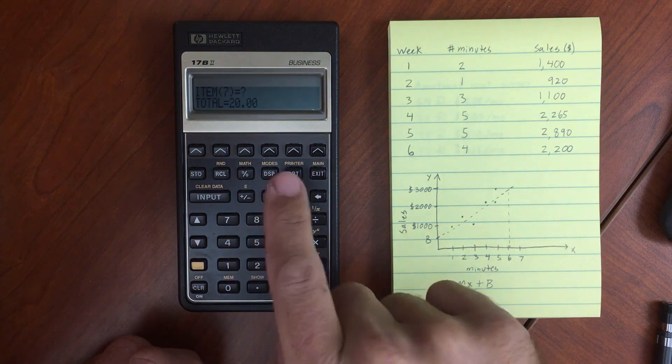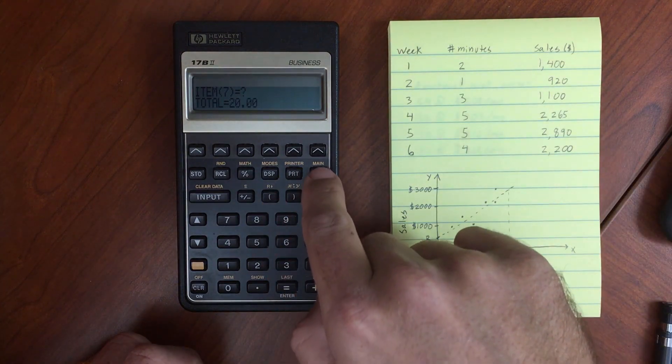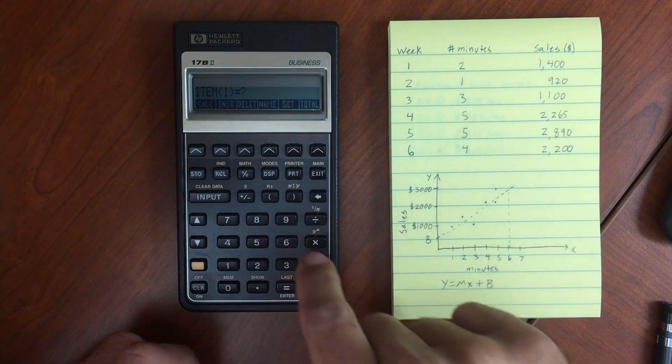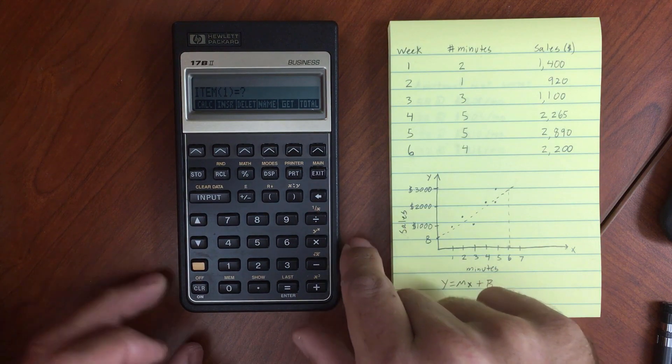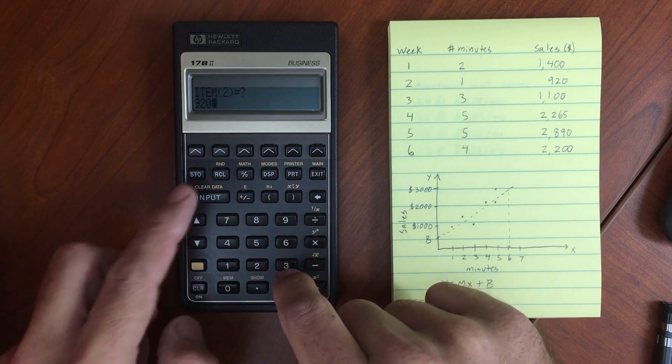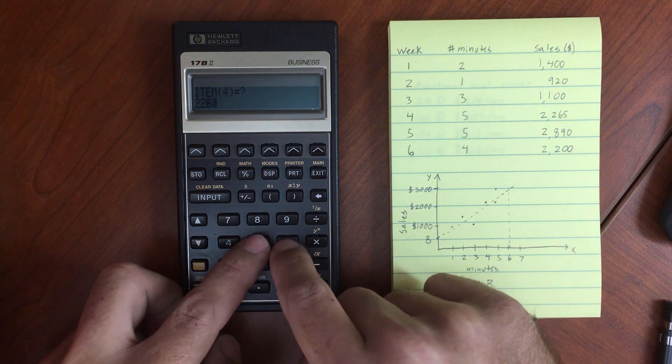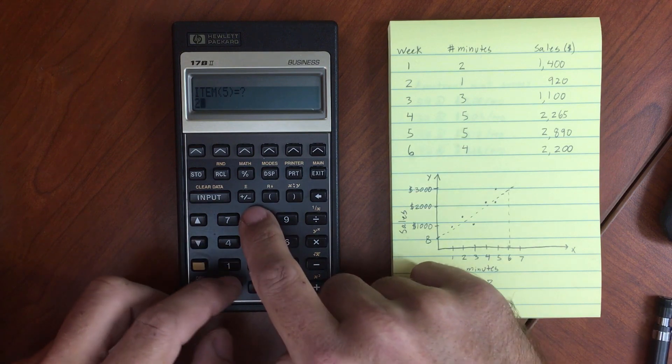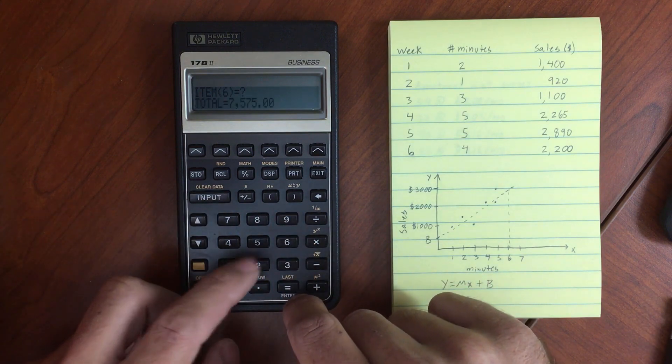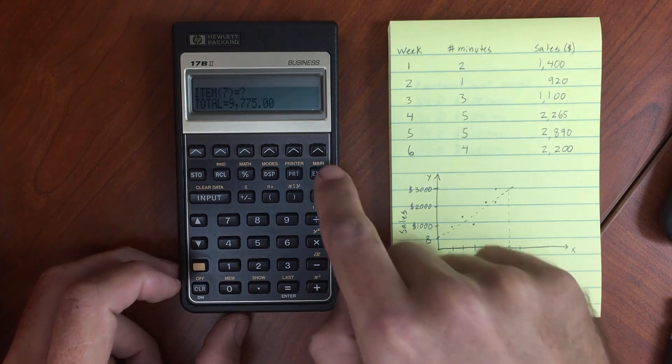So we have six items in our list. Now let's get the sales menu, our sales list. And again, $1,400, $920, $1,100, $2,265, $2,890, and $2,200. So those are our six items for that list.